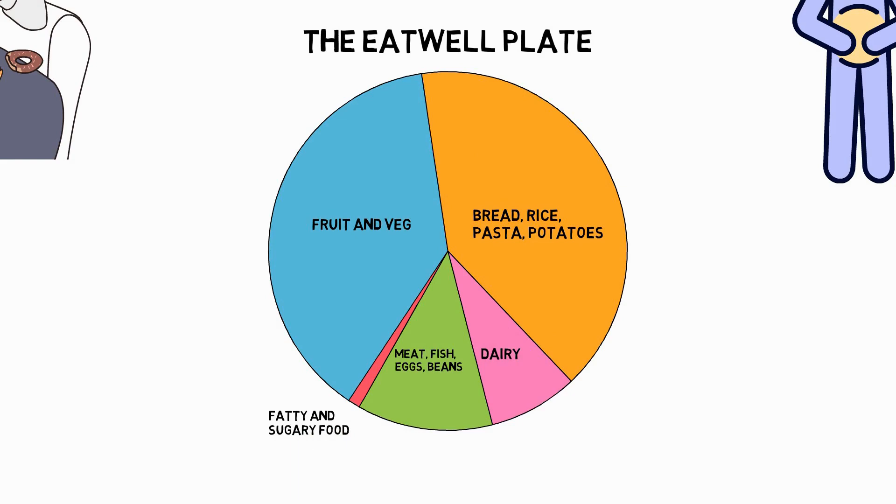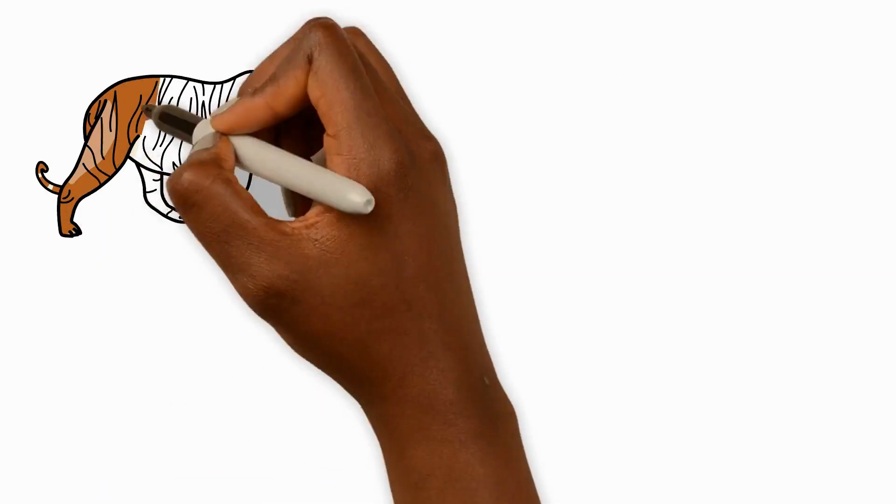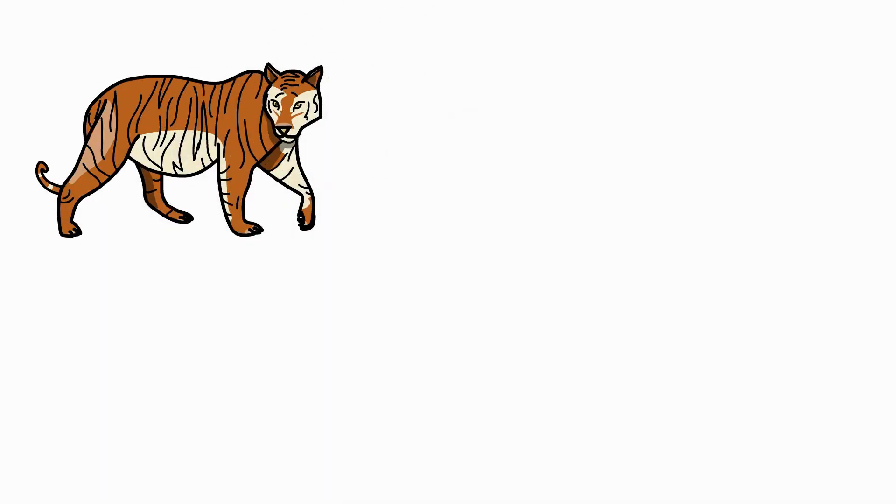Other animals have their own unique energy needs. Tigers, for example, are large carnivores and regularly have to feed on other animals for energy. Compare this to snakes - they can survive for two years without food.